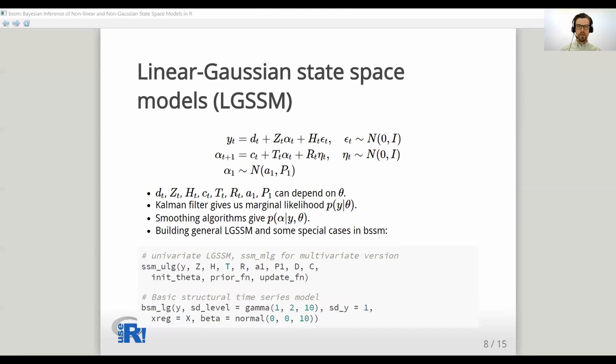So what kind of models bssm supports? First we have linear Gaussian models where the observations y are a linear combination of states plus some Gaussian error term and optional intercept term, and similarly states depend on the states of the previous time points. Different models can be defined by defining different model components D, Z, H, C, T, R, A1, and P1. These are vectors, matrices, or arrays depending on whether we have a univariate or multivariate model. We can build these models with bssm using several functions. For example, ssm_ulg defines general univariate model and bsm_lg can be used to define a structural time series model.